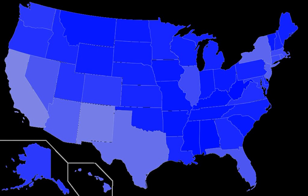American English, sometimes called United States English or U.S. English, is the set of varieties of the English language native to the United States. English is the most widely spoken language in the United States and is the common language used by the federal government, to the extent that all laws and compulsory education are practiced in English. Although not an officially established language of the whole country, English is considered the de facto language and is given official status by 32 of the 50 state governments.